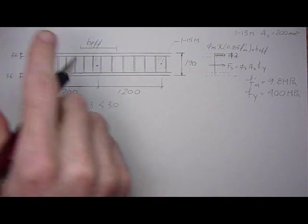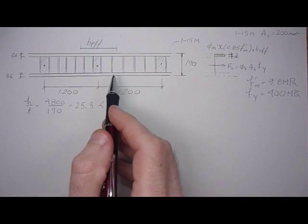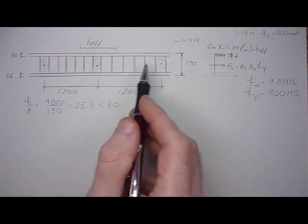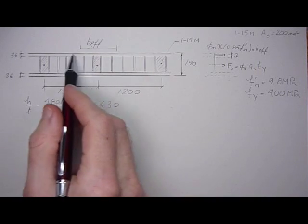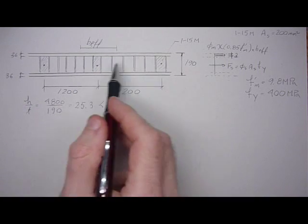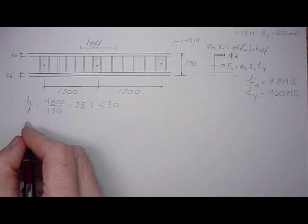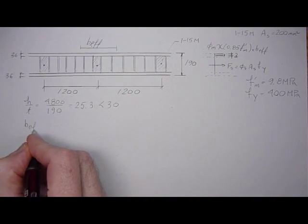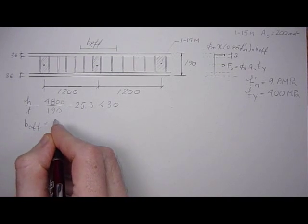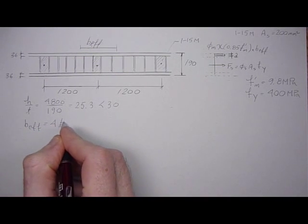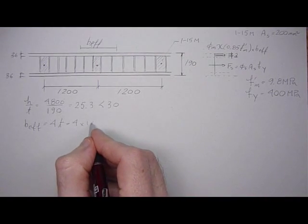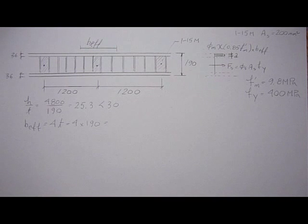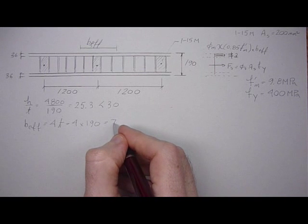Now, the thing we also want to look at, because the rebar is spaced so far apart, we have to take a B effective width for the flange. The whole flange isn't effective because the cores are too far apart. So the code says B effective is to be limited to 4 times the thickness of the wall, which is 4 times 190 for this case, for a 190 wall. So 4 times 190 is 760.